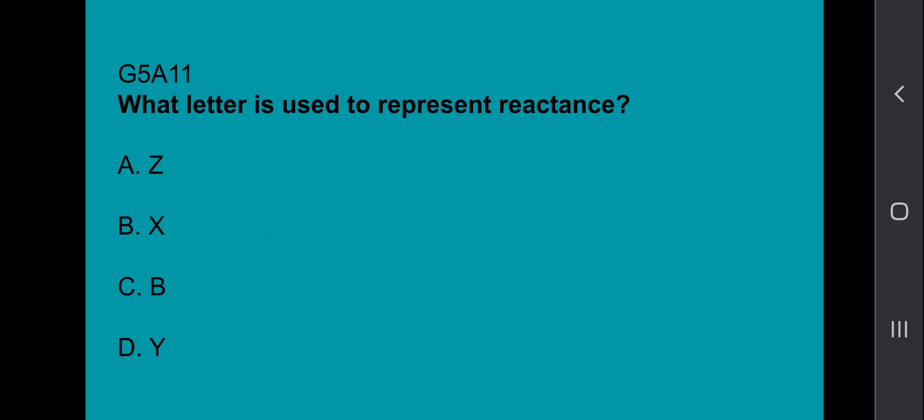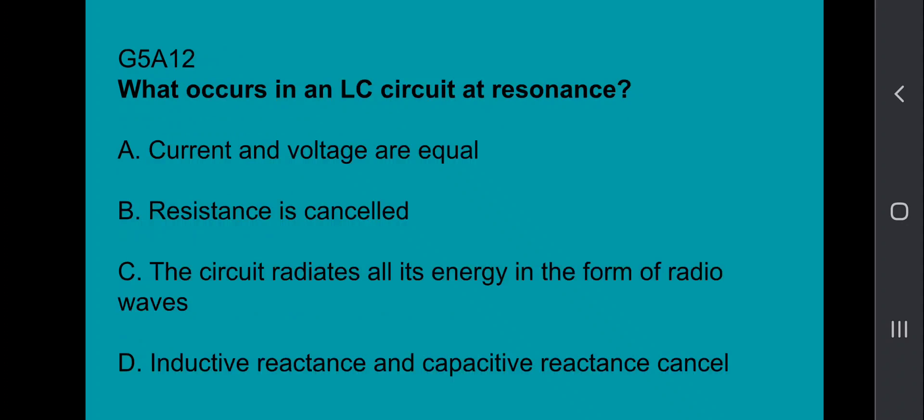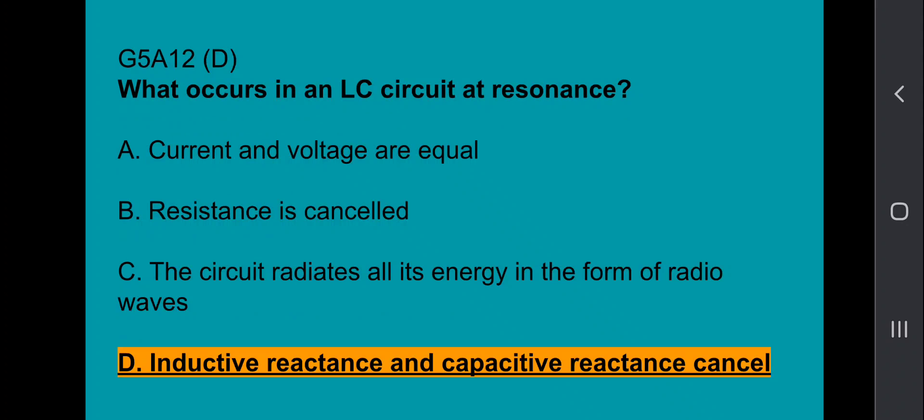G5A11, which letter is used to represent reactance? Reactance is represented by X. G5A12, what occurs in an LC circuit at resonance? Inductive reactants and capacitive reactants cancel.